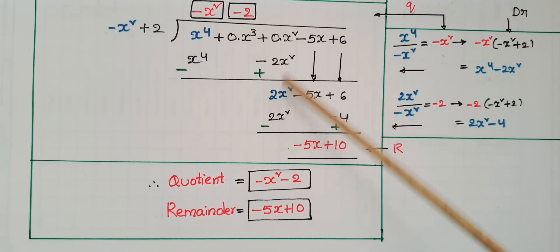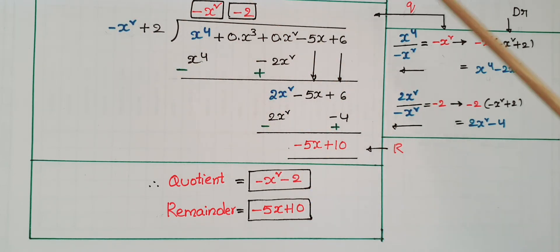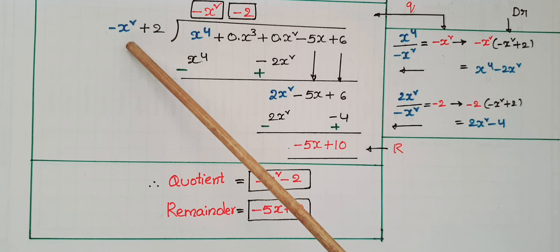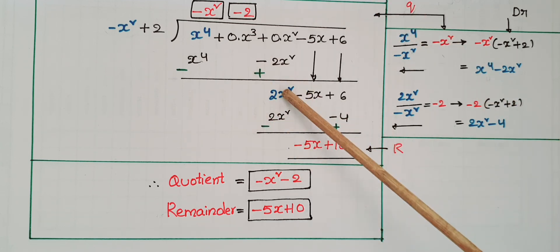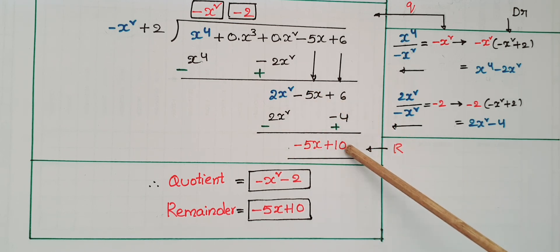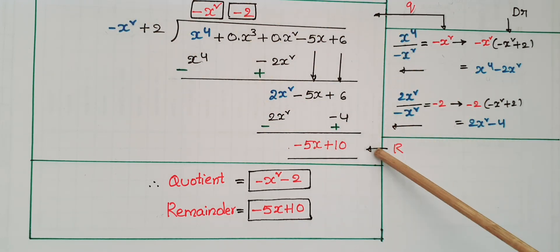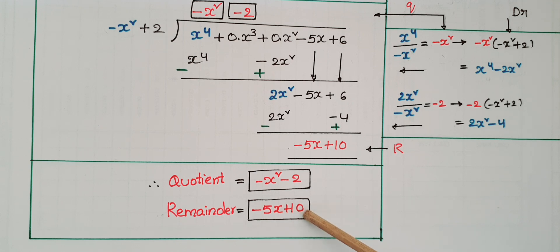Take 2x² divided by -x² = -2. Write -2 at the quotient place. Multiply -2 with (-x² + 2): (-2)(-x²) = 2x², and (-2)(+2) = -4. Change signs and subtract: 2x² - 2x² = 0, and 6 + 4 = 10. We still have the -5x term, so the remainder is -5x + 10. Quotient = -x² - 2, remainder = -5x + 10.